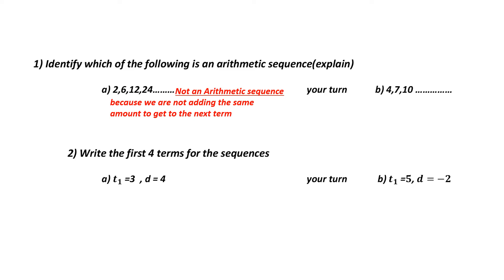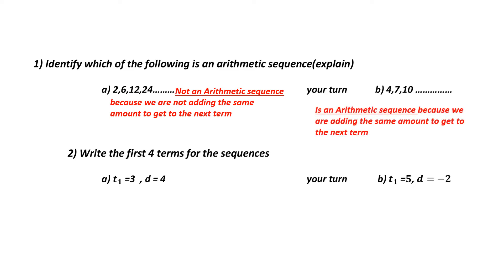Your turn — try B. Hopefully you've had a chance to try it. To go from 4 to 7, I add 3. To go from 7 to 10, I add 3. Therefore, based on what I've seen, this is an arithmetic sequence because we're adding the same amount to get to the next term.